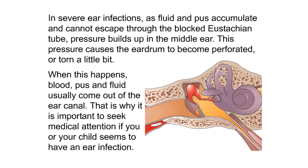In severe ear infections, as fluid and pus accumulate and cannot escape through the blocked Eustachian tube, pressure builds up in the middle ear. This pressure causes the eardrum to become perforated or torn. When this happens, blood, pus, and fluid usually come out of the ear canal. That is why it is important to seek medical attention if you or your child appears to have an ear infection.